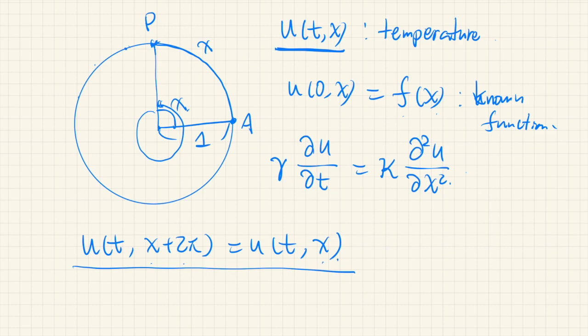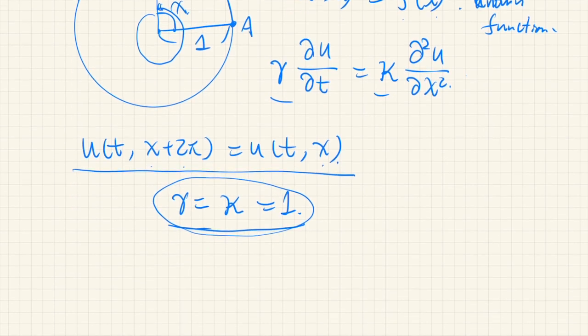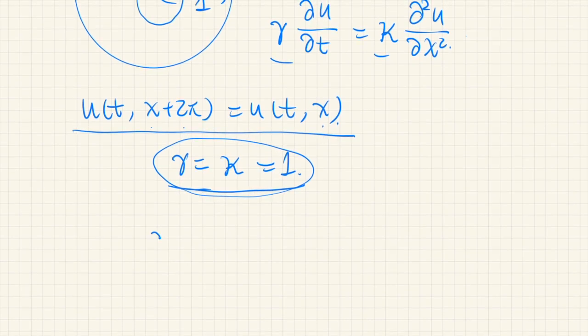From now on, we set gamma and kappa equal to 1. This is always possible by taking some appropriate unit. So instead of meters, we may use inches and so on. So by doing that, we can just set to this value. So this heat equation is simplified to this partial differential equation.